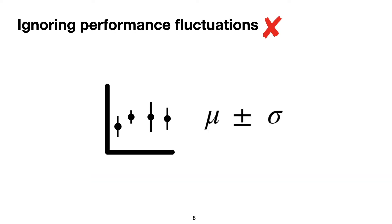The next problem, which is also very important, is ignoring performance fluctuations. This can be easily avoided by running experiments 3, 5, or 10 times and reporting the average and standard deviation of the performances.